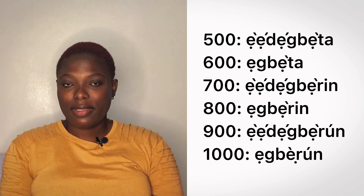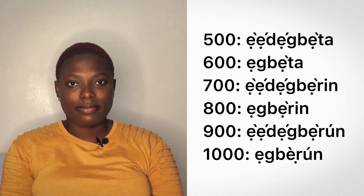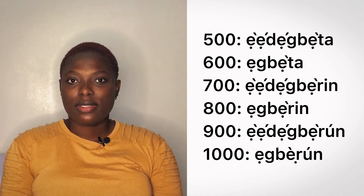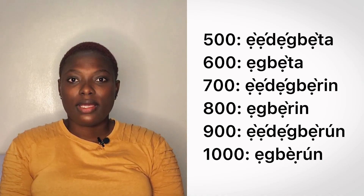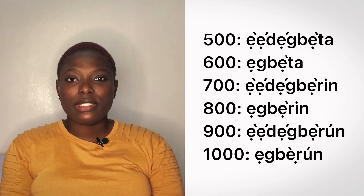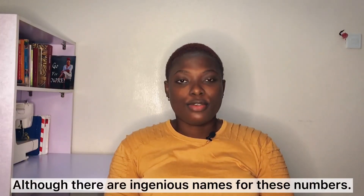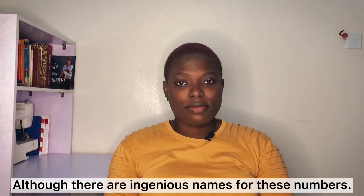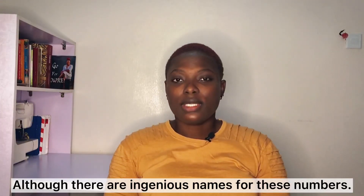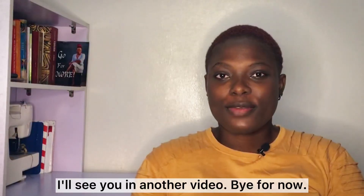800 is egberu. Then 700 will be derived from egberu minus 100. 1000 is egberu as well. So 900 will be edegberon. It is not common to see things like egbero meji for 2000, egbero meta for 3000, and so on. In a subsequent video, we will do Yoruba arithmetic — isiro, inatuma, re, ino, foro mi. Odabo.